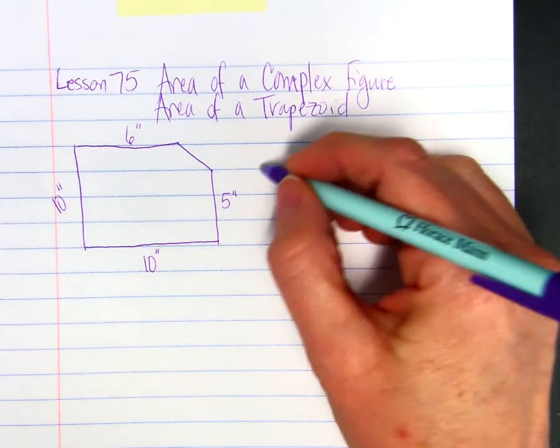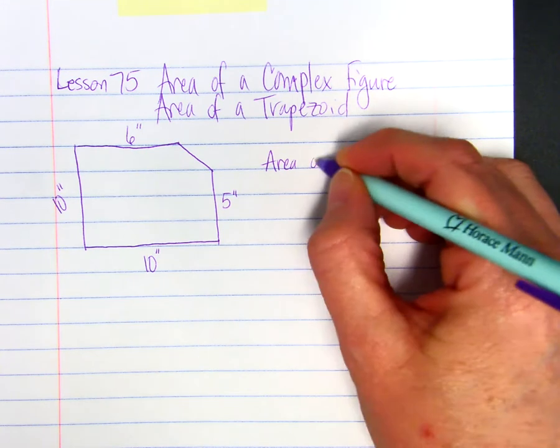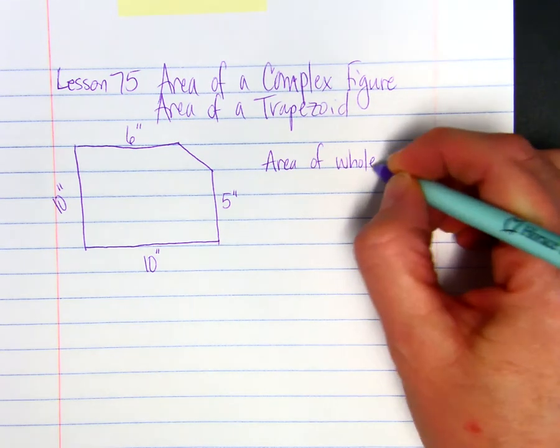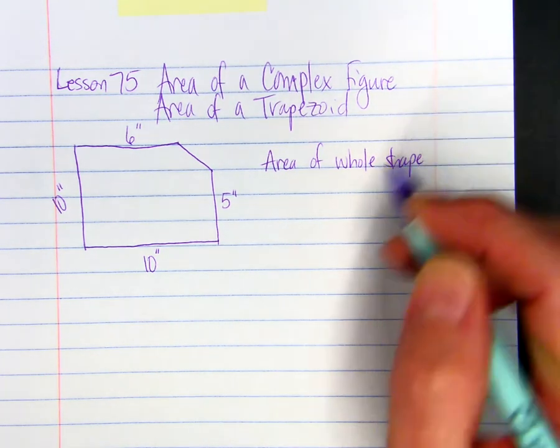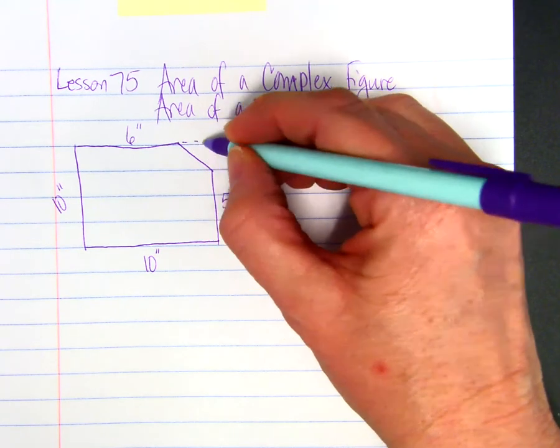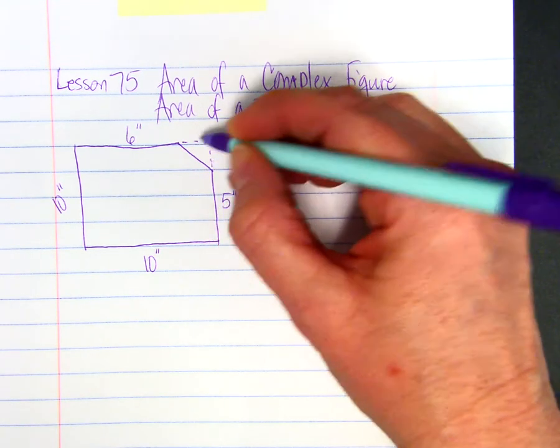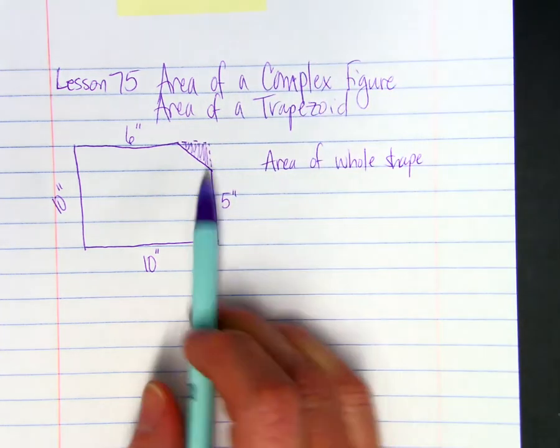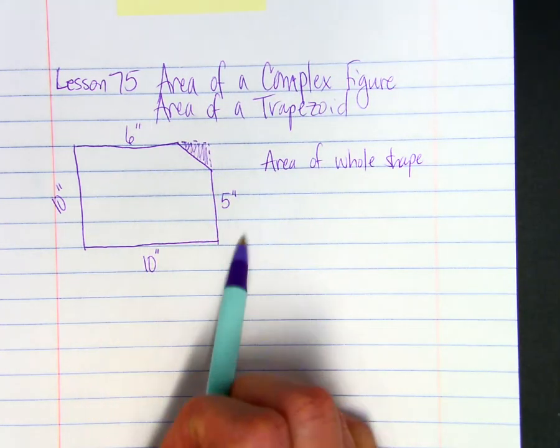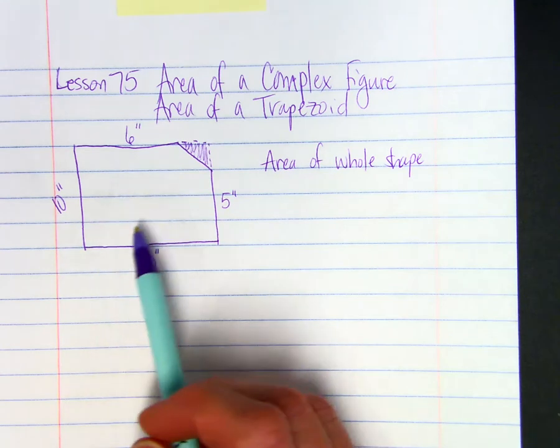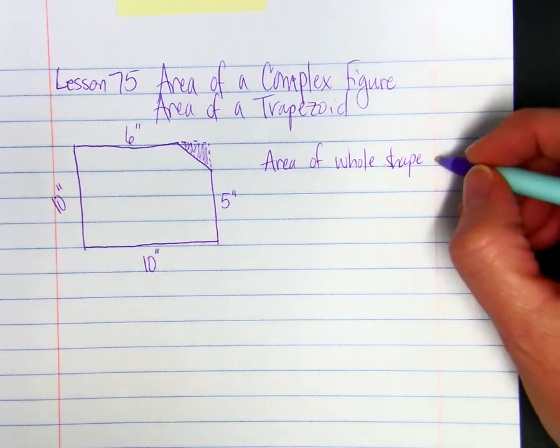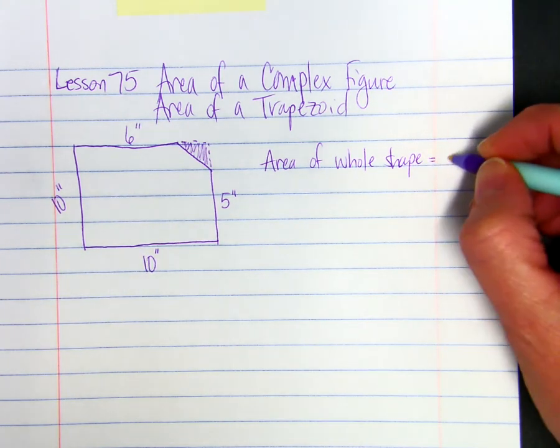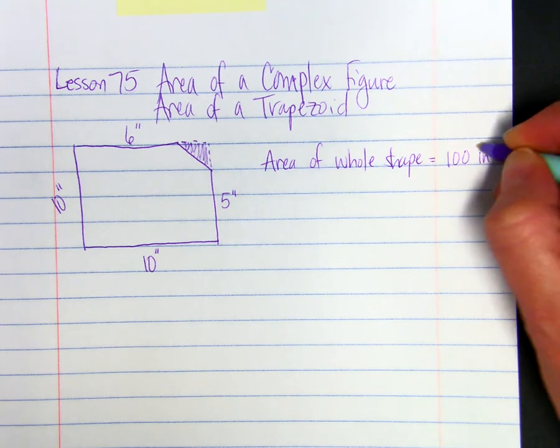We can take the area of the whole shape as if the corner were not cut out. So if we were to just put a dotted line there, maybe highlight it a little bit. So the area of the whole thing without the corner cut off would be 10 times 10, or 100 inches squared.